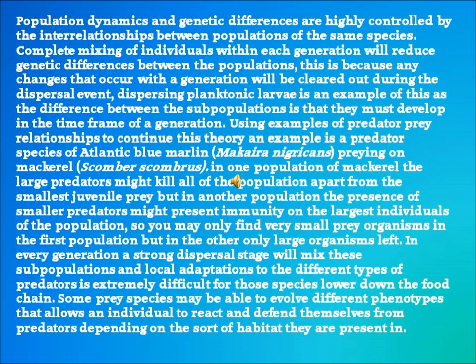Using predator-prey relationships to continue this theory: an example is a predator species of Atlantic blue marlin preying on mackerel. In one population of mackerel, large predators might kill all but the smallest juvenile prey, but in another population the presence of smaller predators might exert pressure only on the largest individuals. In every generation, a strong dispersal stage will mix these subpopulations and their local adaptations to different types of predators. It is extremely difficult for species lower down the food chain, as some prey species may be able to evolve different phenotypes that allow individuals to react and defend themselves from predators depending on the habitat they are present in.